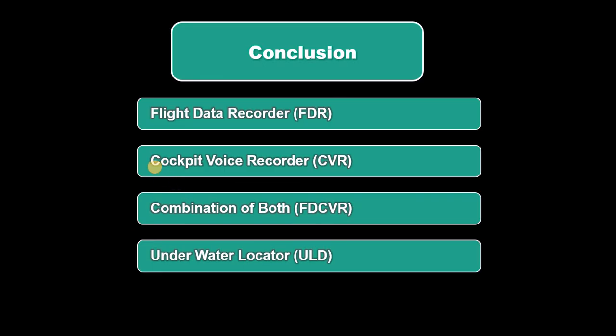The underwater locator beacon transmits at a frequency of 37.5 kHz. Thank you very much. I hope you liked this lecture — don't forget to like and share this video and subscribe to our channel.